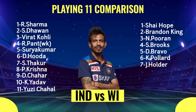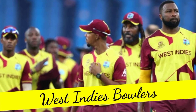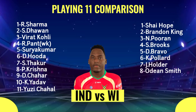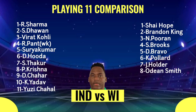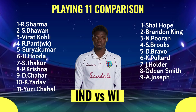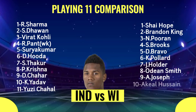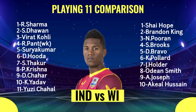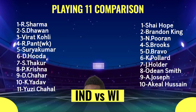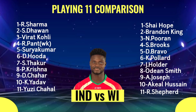India bowlers continued: Number 10 Kuldeep Yadav, Left-Arm Leg Spinner. Number 11 Yuzi Chahal, Right-Arm Leg Spinner. West Indies Team Bowlers: Number 8 Odean Smith, Right-Arm Fast Bowler. Number 9 Al-Zari Joseph, Right-Arm Fast Bowler. Number 10 Akeel Hussain, Left-Arm Off Spinner. Number 11 Romero Shepard, Right-Arm Fast Bowler.